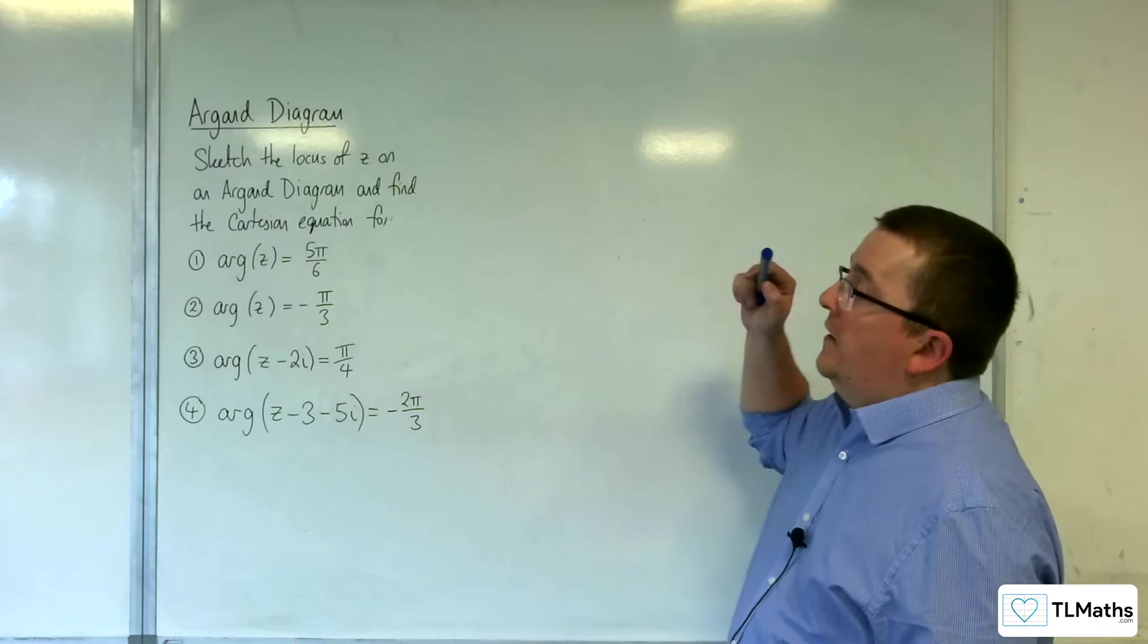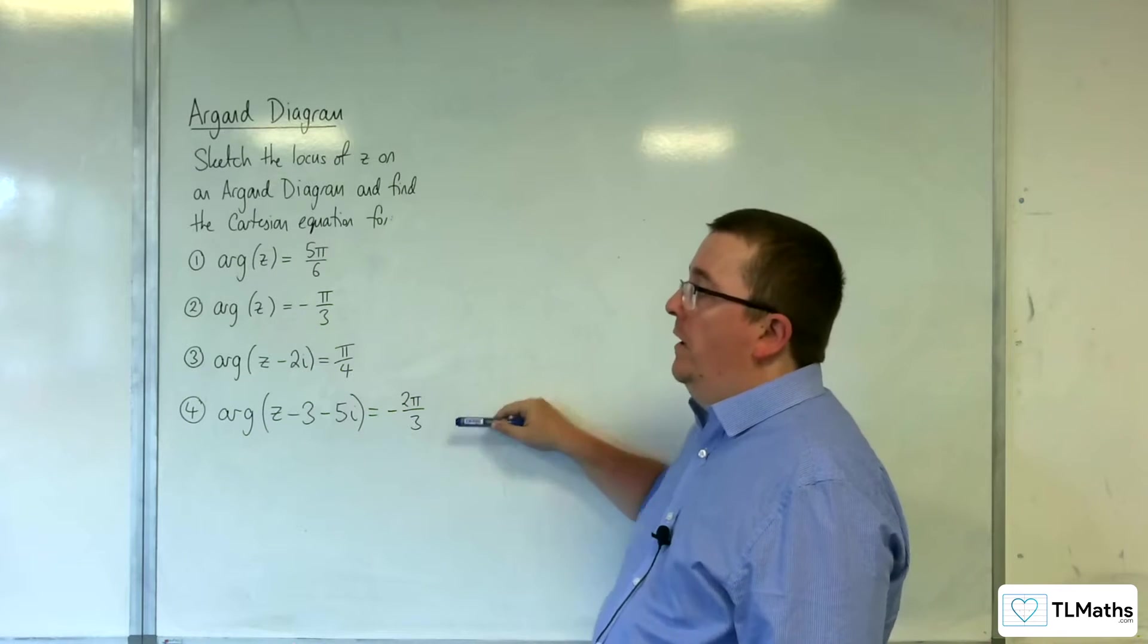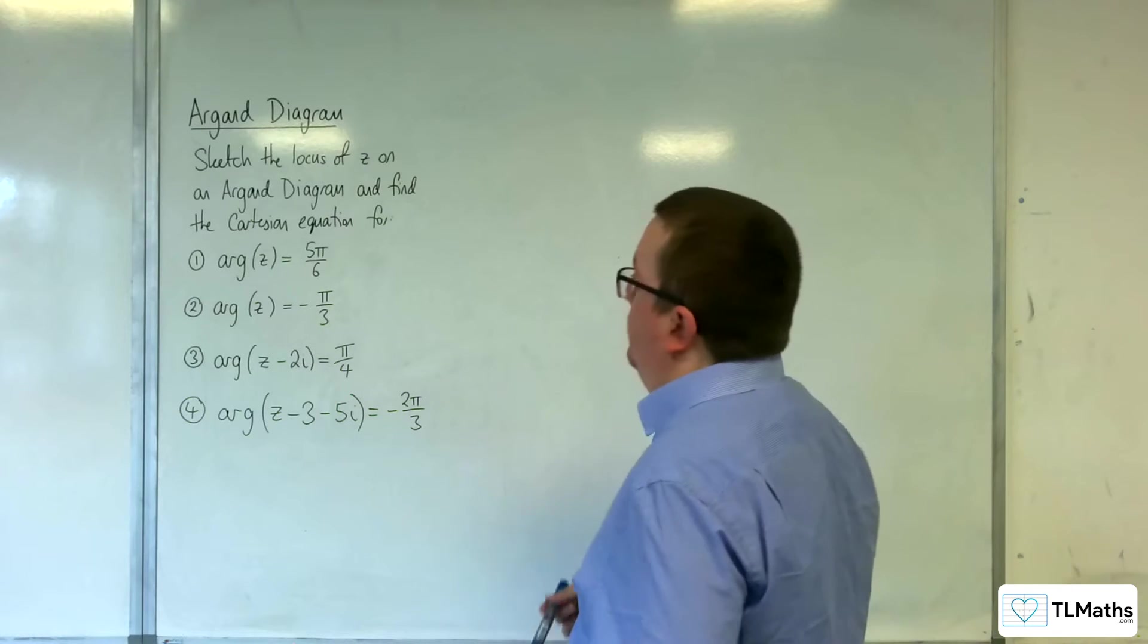So, in this video, what we're going to be looking at is sketching the locus for each of these on an Argand diagram, and also finding the Cartesian equation at each stage as well. So, let's crack on with number one.